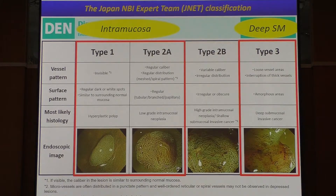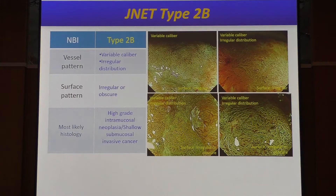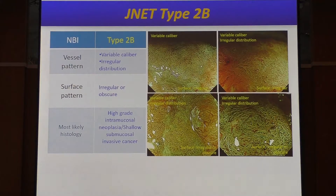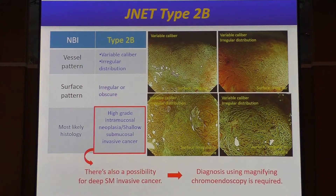On the other hand, if the lesion shows type 1 or type 2A, you can understand that this lesion must be an intramucosal lesion. How about type 2B? Type 2B is characterized by variable caliber of vessels, irregular distribution of vessels, and irregular or obscure surface pattern. JNET type 2B indicates high-grade intramucosal lesion or shallow submucosal invasive cancer. However, there is also a possibility of deep SM invasive cancer, so you cannot complete the diagnosis using only magnified endoscopy — you need further evaluation.